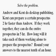Solve the problem. Andrew and Kent do desktop publishing. Kent can prepare a certain prospectus two hours faster than Andrew. If they work together, they can do the entire prospectus in five hours. How long will it take each of them working alone to prepare the prospectus? Round your answers to the nearest tenth of an hour.